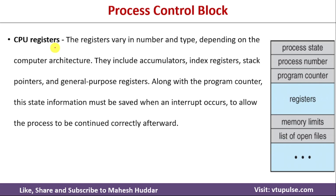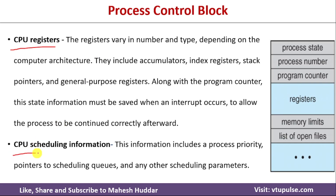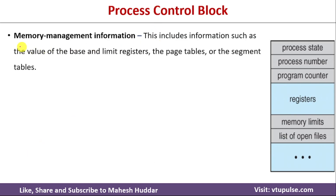The next component is the CPU registers. Whenever we execute a program, we use a set of registers, and those registers may hold values during execution before the process moves to another state. Whenever we come back and start executing, we need to reload those register values. Next is the CPU scheduling information — what kind of scheduling algorithm is being used, whether it is FCFS, SRTF, or something else. The memory management information is also stored, including the size of the process, base and limit register values, page table size, and segment table details, so that when the process is reloaded, we can start executing correctly.